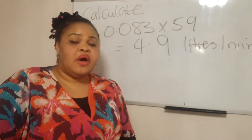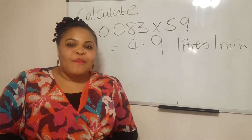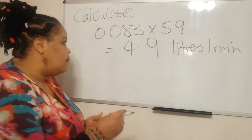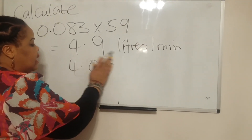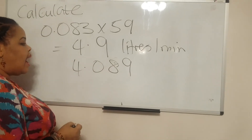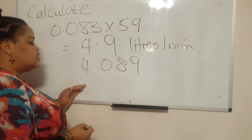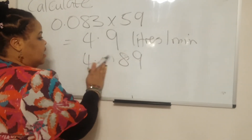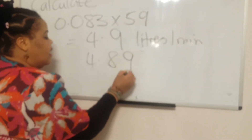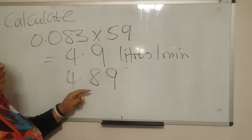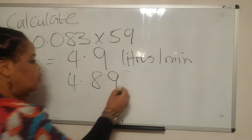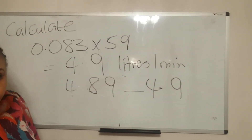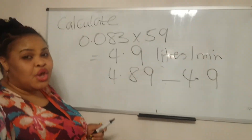The answer is given to two significant figures. When you do calculations in science, please check how many significant figures you are asked to give. For example, if your calculated answer were 4.89, and you were asked to reduce it to two significant figures, you would round it up to 4.9 — that is two significant figures. Be very careful to watch out for how many significant figures you are required to give.